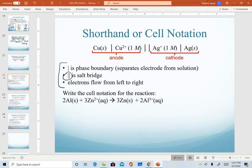As a practice, I want you to write the cell notation for this equation, the reaction between aluminum and zinc. Pause the video. Practice writing the shorthand or cell notation for this one. Then when you play again, I will show the answer for it.